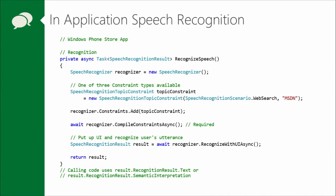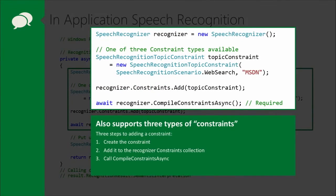Let's look at the basic recognition code. First, you create a speech recognizer — just like we had a speech synthesizer. Then you can define the topic constraint you want to use. In this case we're using a topic constraint of type web search, and you give it a name because then you can reference the constraint later.